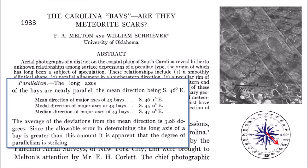Working from aerial maps, Melton and Shriver found that the bays are nearly parallel with the mean direction of south 46 degrees east, which corresponds to an azimuth of 136 degrees. The average deviation from the mean direction is 3.08 degrees. Since the allowable error in determining the long axis of a bay is greater than this amount, the degree of parallelism is striking.